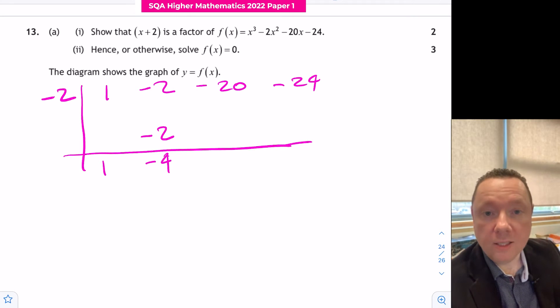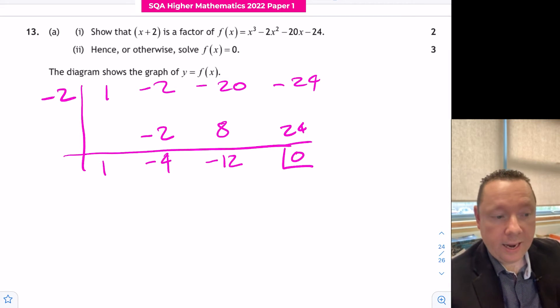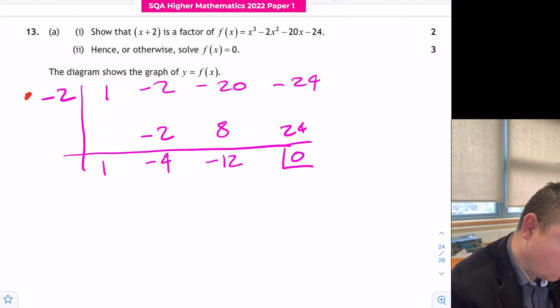Minus 4 times minus 2 is 8, adding them together to get minus 12. Minus 12 times minus 2 is 24, adding them together to get 0. And we get a mark at that point for using minus 2 in the synthetic division.